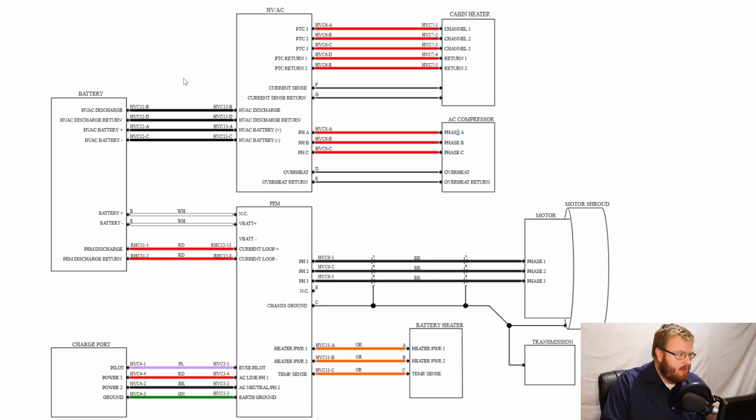So your battery outputs here to your HVAC that goes to your cabin heater and to your AC compressor. That is a function of the power electronics module. It's shown as separate here, but it is a function of the power electronics module. Then have your battery pack go into your power electronics module.